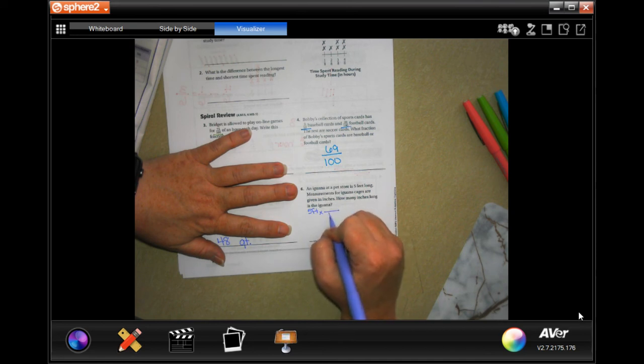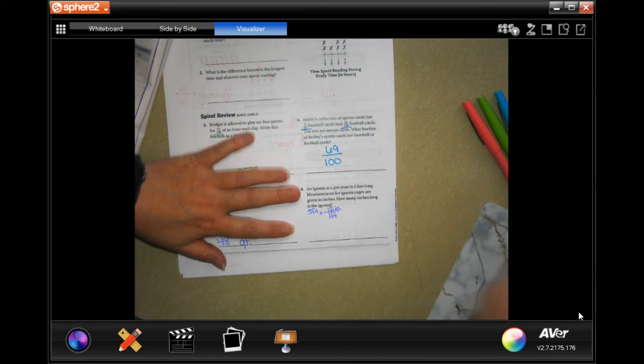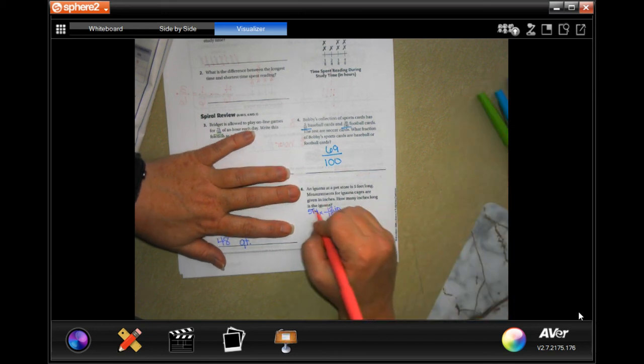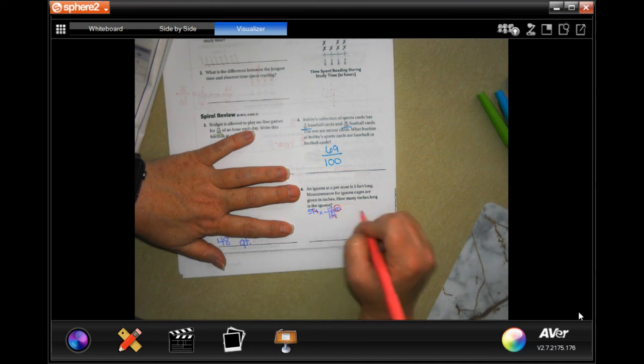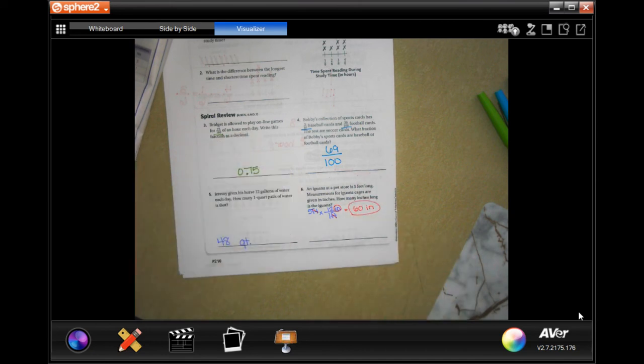When one foot is 12 inches. So we cancel out feet, I'm left in inches, and five times 12 is 60. 60 inches done.